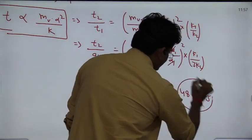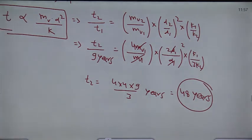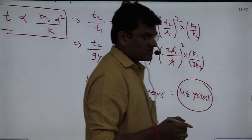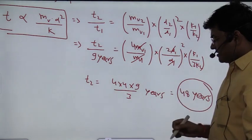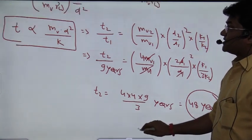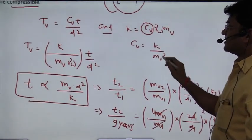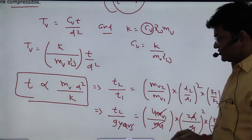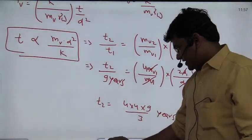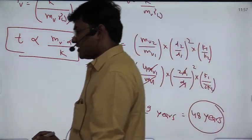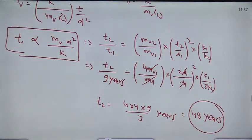So this question, the answer will be 48 years. Clear? The concept is very simple. Consolidation, the two basic equations: one is the time factor, that is the dimensionless parameter that you have used. And one of the 1D consolidation theory, that was the relation K equal to Cv, Mv, gamma w that you have used. Basic definitions used. And in the question, how much time is going to change, that you have calculated. The answer will be 48 years.